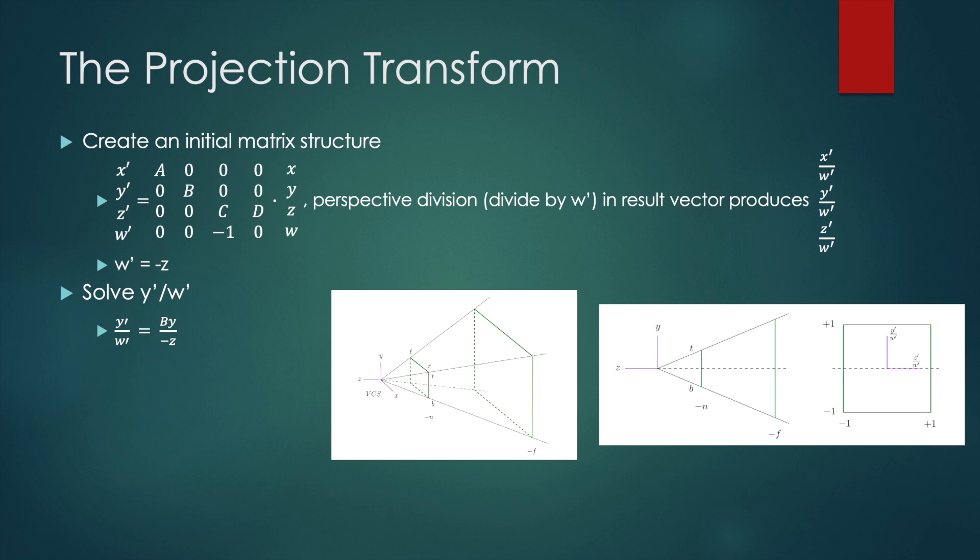So the term that determines where y is in the near clipping plane which is ranged from b to t is n over minus z.